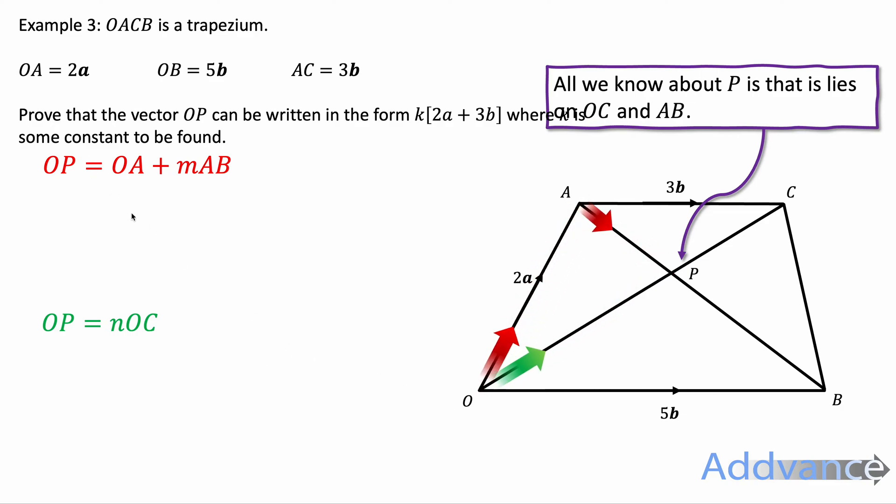OP is OA plus m times AB where m is some fraction of AB. So we're going from O to A and then A to P which is some fraction of the vector A to B. O to P is n times O to C because O to C is going all the way across, P is some fraction of that.